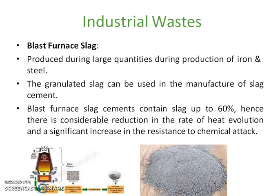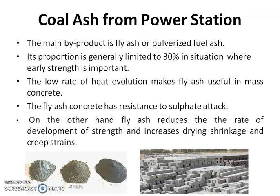Coming to industrial waste, first is blast furnace slag. It is obtained as a byproduct of iron and steel manufacturing plants. It can be used up to 60%. Blast furnace slag cement contains slag up to 60%, and it has a very low rate of heat evolution, so it is very resistant to chemical attack also.